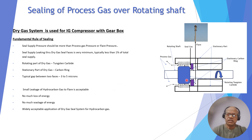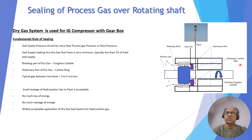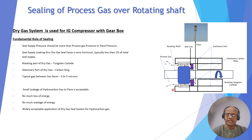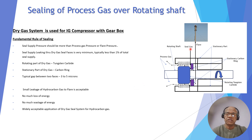In the dry gas seal arrangement, the blue-colored rotating tungsten carbide ring is fixed to the shaft and rotates with it. The stationary carbon ring is attached to the housing and remains fixed. Between these two faces there is only a 3 to 5 micron gap — a very small clearance. Because of this extremely small gap, even with very high differential pressure across it, the leakage flow is less than 1% of total seal gas flow.